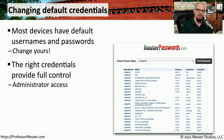You would configure the switch to trust routers, switches, DHCP servers, and anything else that is legitimately handing out DHCP responses. You would not want to have the switch trust any of the other devices on your network, such as other computers or devices that could be turned into unofficial DHCP servers.